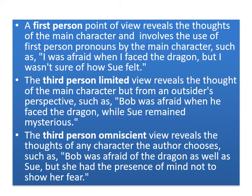Third person omniscient reveals the thoughts of any character the author chooses. For example: 'Bob was afraid of the dragon, as well as Sue, but she had the presence of mind not to show her fear.' The omniscient narrator can enter the thoughts and feelings of any character in the story.